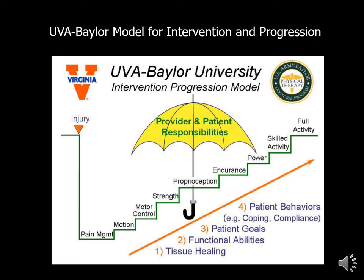Tissue healing is going to play a huge factor in our rehabilitation plan. We're also going to think about functional abilities, patient goals, and patient behaviors in terms of coping, compliance, etc. Think about patient comorbidities as well. Depression is a major comorbidity that influences many patients following surgery, and we want to make sure that if we're dealing with individuals who have depression, that it's being appropriately managed. The umbrella in the middle of the screen really comes down to what the responsibilities are for us as a provider as well as the patient, especially for post-surgical cases where motion, strength, and post-operative rehab are going to be key for recovery.